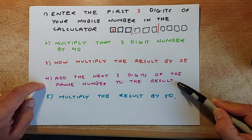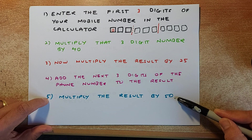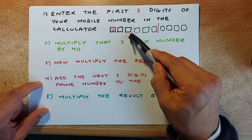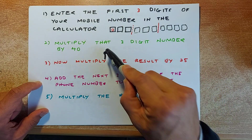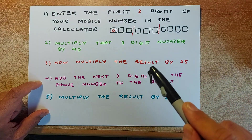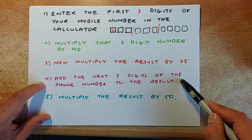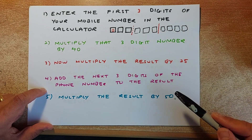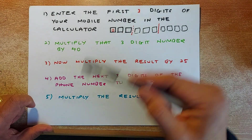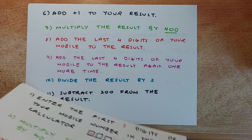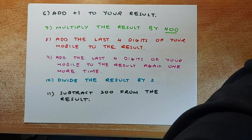Don't forget to press the equals key or the execute key. Now you have done that, you are going to multiply that result by 50. We shall continue with the next steps and you will be able to get your number very soon.